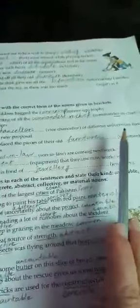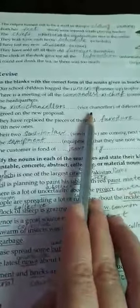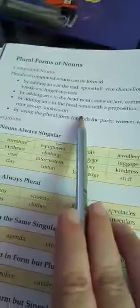Number three is: the vice chancellors of different universities have agreed on the new proposal. Now, as different universities are mentioned, it will take the plural form and will become vice chancellors, as also mentioned in the previous rules.